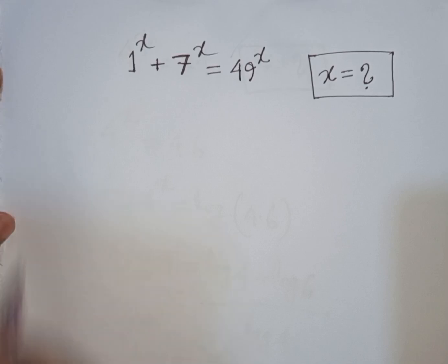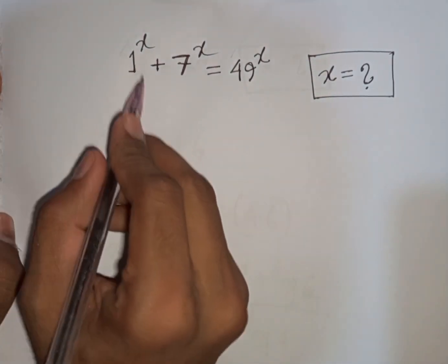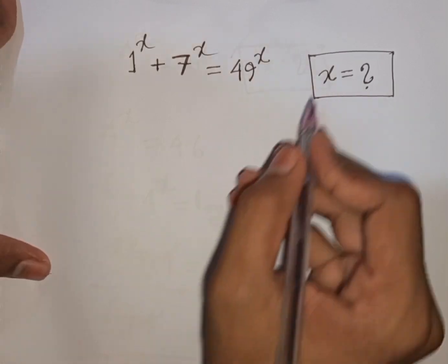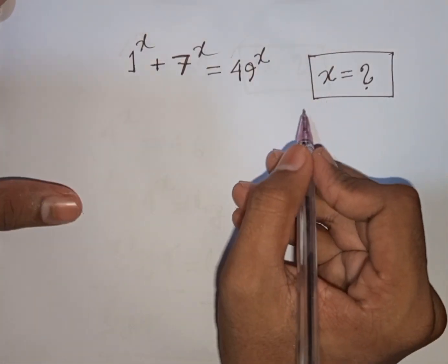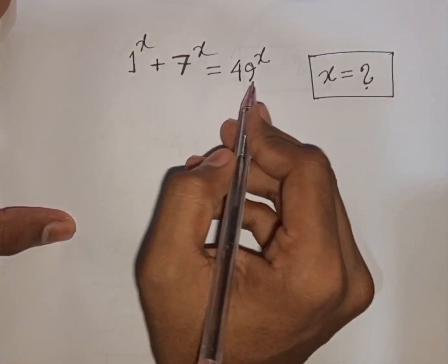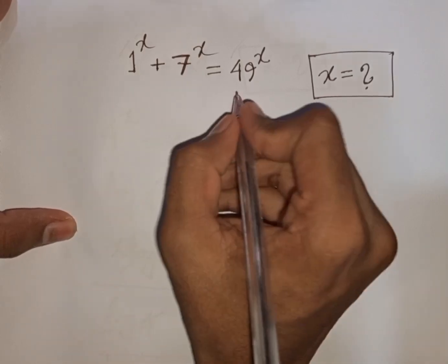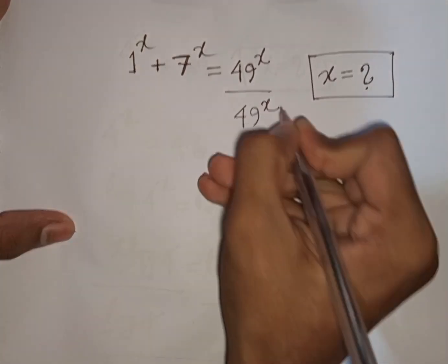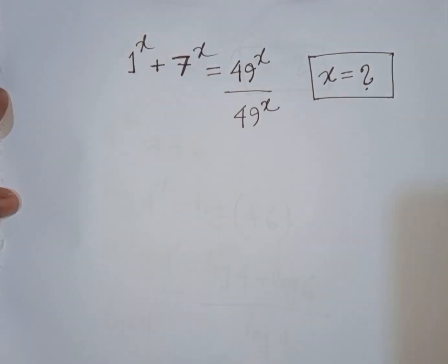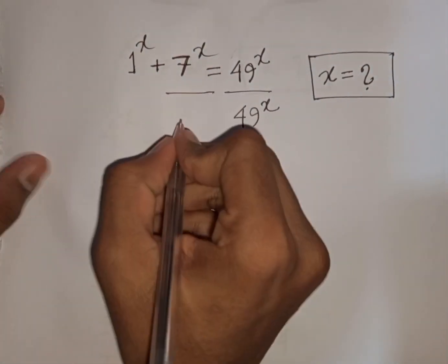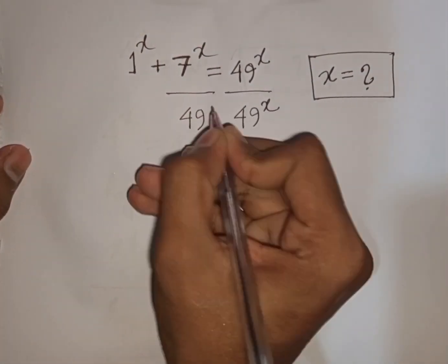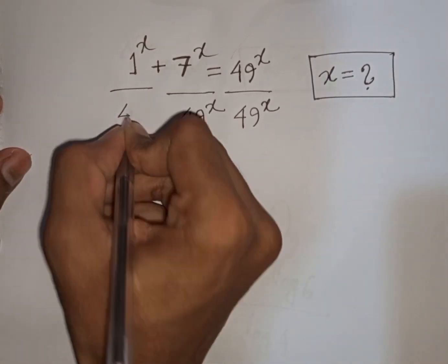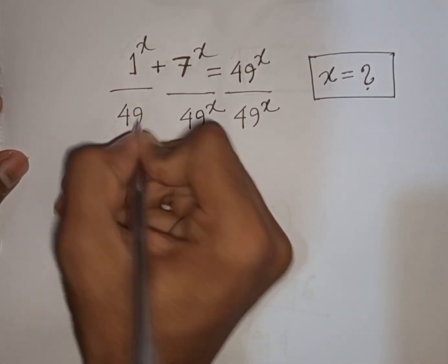How to solve 1 power x plus 7 power x equals 49 power x. Find the value of x. First, we divide both sides by 49 power x.